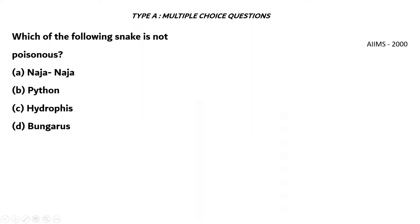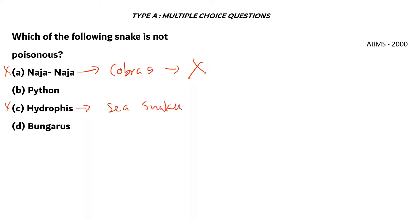Next question. Which of the following snakes is not poisonous? A. Naja, B. Python, C. Hydrophis, D. Bungarus. Option A, Naja, is the scientific name of cobras, which are poisonous. Option C, Hydrophis, refers to sea snakes, which are generally poisonous. Option D, Bungarus, refers to kraits — a family of snakes which are highly poisonous. The right answer is option B, Python, which are the largest non-poisonous snakes in the world.